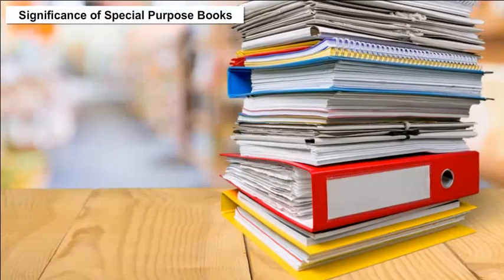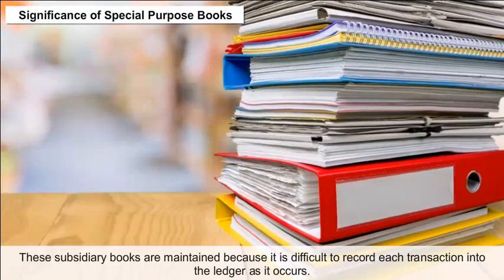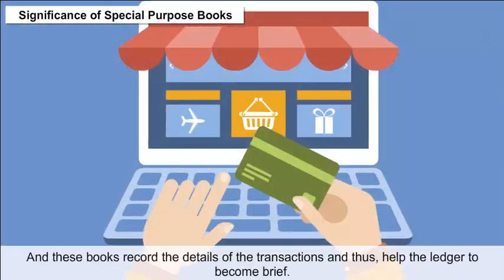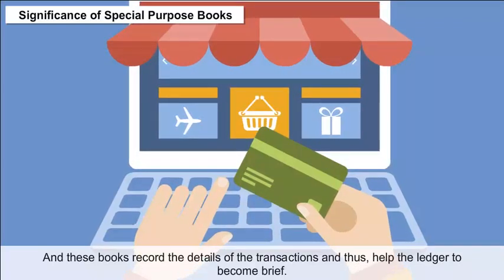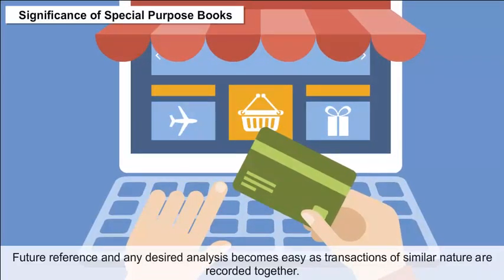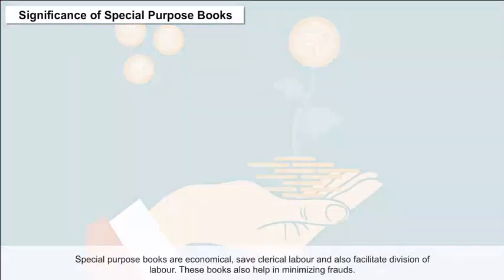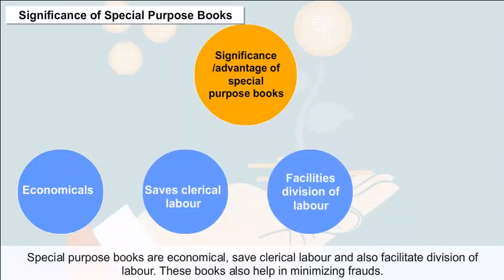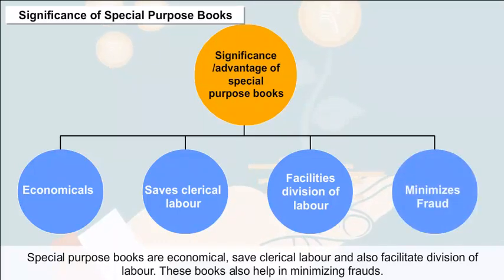Significance of Special Purpose Books: These subsidiary books are maintained because it is difficult to record each transaction into the ledger as it occurs. They record details of transactions and help the ledger to become brief. Future reference and analysis becomes easy as transactions of similar nature are recorded together. Special purpose books are economical, save clerical labour, facilitate division of labour, and also help in minimizing frauds.